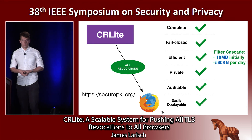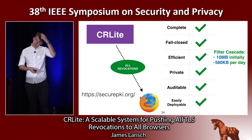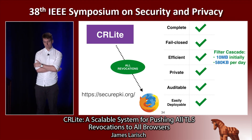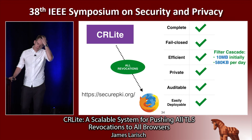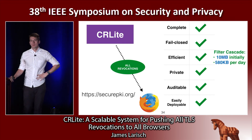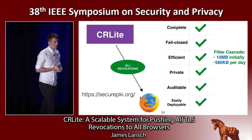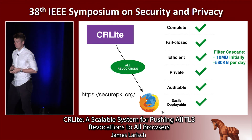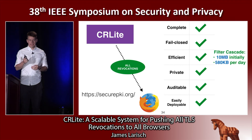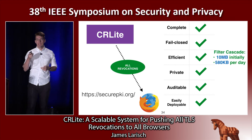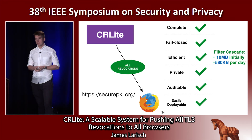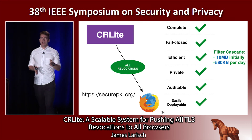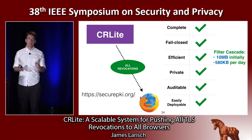Question from Steve Matsumoto, Carnegie Mellon University: You talk about having access to all certificates using different data sources. Given the churn — new certificates being issued at a much larger rate — does the 580 kilobytes per day diff take into account that churn? Answer: The diffs do take that into account. However, since the issuance rate is much higher than the revocation rate, periodically there are times where we need to resize the filter, making a diff not possible. So there might be multiple times during the year where we have to reissue a full CRL Lite.